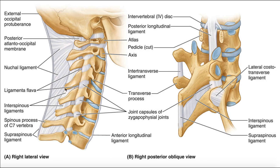Then we have what are called interspinous ligaments. Let the name guide you — it's a ligament that exists between spinous processes. The interspinous ligament doesn't exist above C1 because it has to be between two spinous processes. Technically, the structure between the C2 spinous process and the C1 posterior tubercle is an interspinous ligament. Generally, they're going to exist between all these spinous processes, and they exist through the cervical spine and down through the lumbar spine to the sacrum.